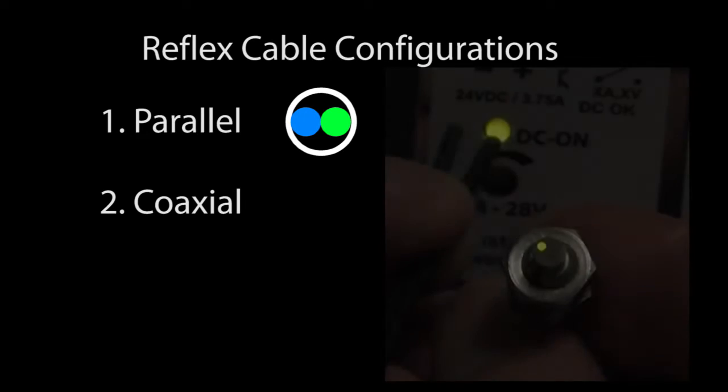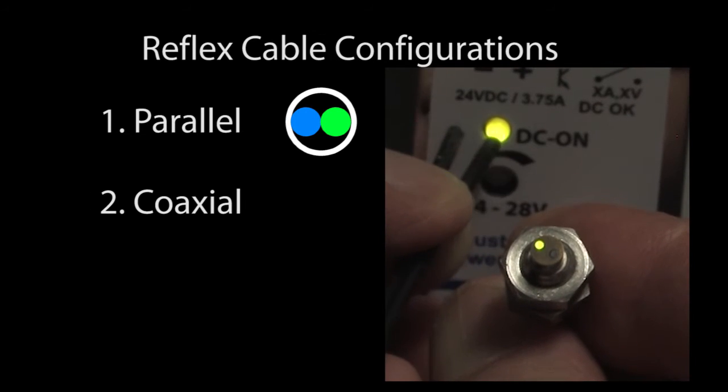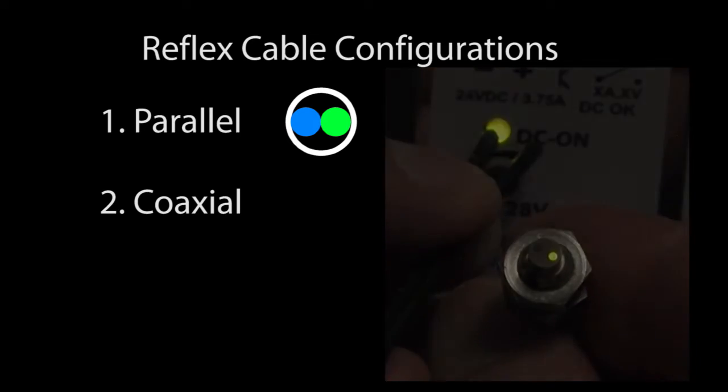There's two types of cable configurations in the optic heads. Parallel and coaxial. In parallel, the fibers are aligned in the head side by side. If I hold the other end of the cable up to an LED, you can see the fiber bundles are side by side or parallel. This is one side, this is the other.